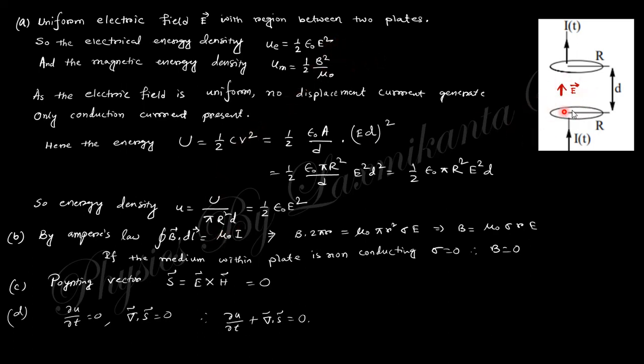The electric energy density and magnetic energy density give total energy, so the energy density equals the electric energy only—no magnetic energy. Because there is no conduction current here, and since E is uniform, dE/dt is zero, so the magnetic field is also zero. The Poynting vector is also zero, and this is valid.